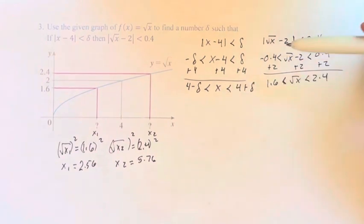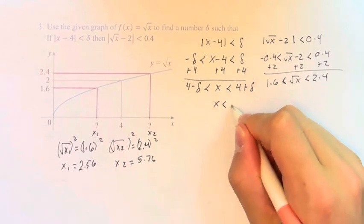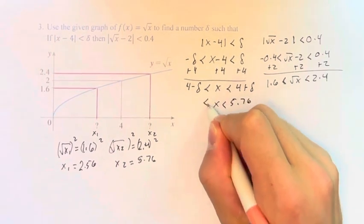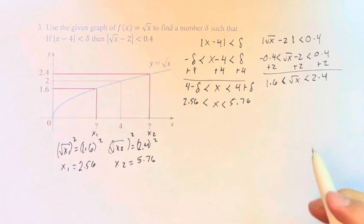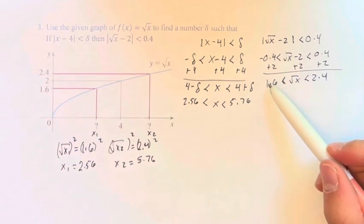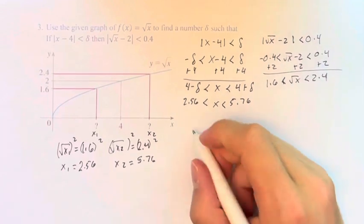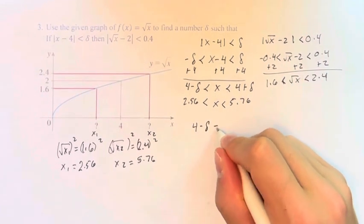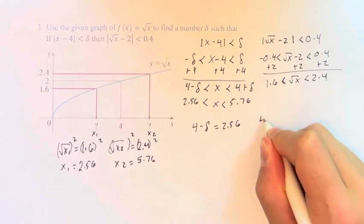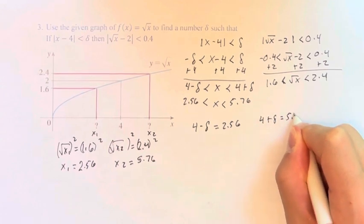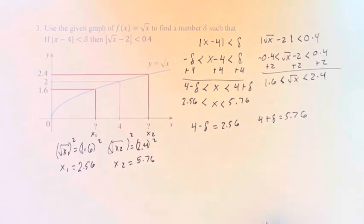And we're saying that if we stay within 5.76 and 2.56, the function is going to stay between 1.6 and 2.4. So what is the delta that corresponds with this? Well, if 4 minus delta equals 2.56, and 4 plus delta equals 5.76, we can solve for delta.